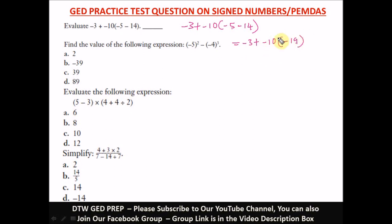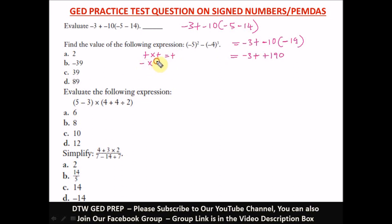Next, let us multiply what's in the parenthesis. That's where most students make a mistake — they just do 10 times negative 19, but it's negative 10 multiplied by negative 19. Negative 10 times negative 19 gives us positive 190. Remember the sign rules: a negative times a negative is a positive, a negative times a positive is a negative. You'll see all that in the sign rules video.